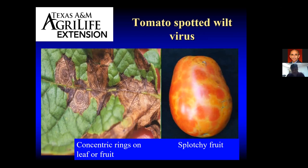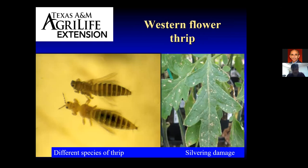This virus, like the previous one, is transmitted by an insect — but in this case it's a different insect. It's generally thrips-transmitted, and the western flower thrips is considered the most effective in transmitting this virus. There are so many species of thrips out there: western flower thrips, eastern flower thrips, tobacco thrips. They get on a variety of plants, and you're probably not going to know which exact species you have without identification. Just be aware that thrips are the cause of the transmission of the virus.